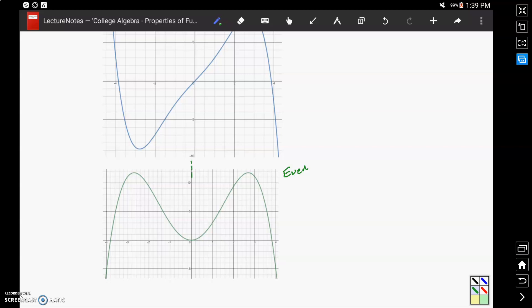The reason being we can draw a line, a vertical line, straight through our y-axis, and that becomes a line of reflection, meaning the graph on the left-hand side and the right-hand side are perfect mirror images of each other.